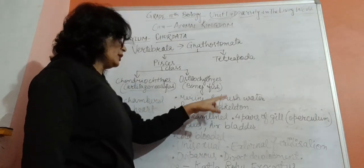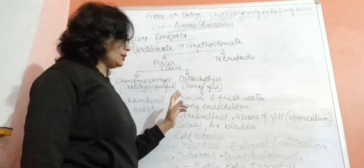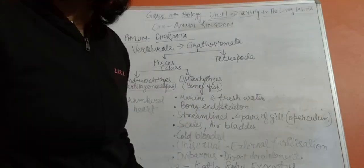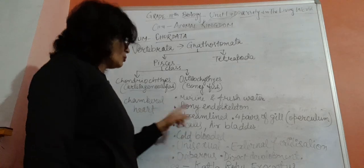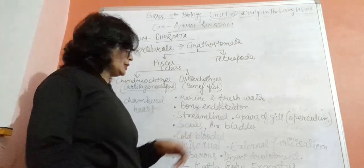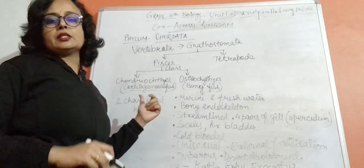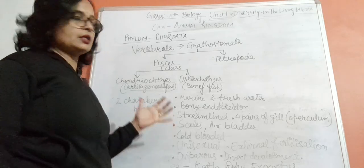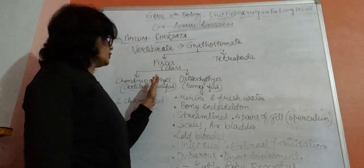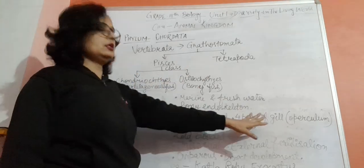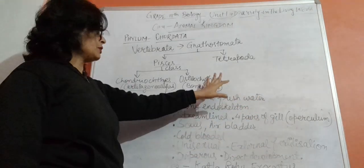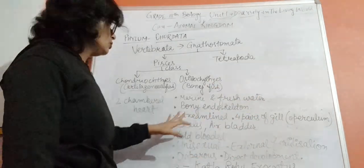They have four pairs of gills with operculum. The operculum covers the gills. It was not present in Chondrichthyes, but operculum is found in Osteichthyes.